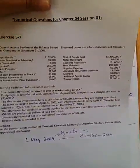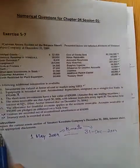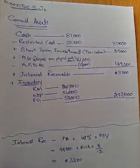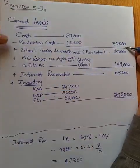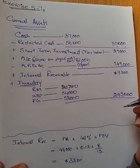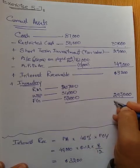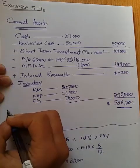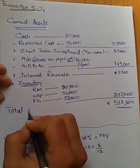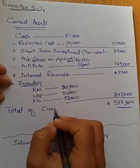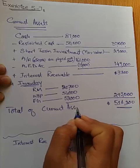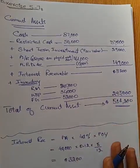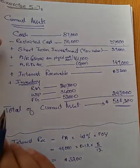After inventory we check for prepaid expenses, but there are none in this numerical. So we add up all the current assets: $37,000 (cash) + $29,000 (short-term investments) + $149,000 (net accounts receivable) + $3,200 (interest receivable) + $293,000 (inventories) = $511,200 total. This is the total current assets only, not total assets.